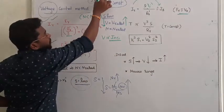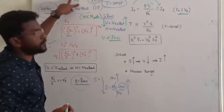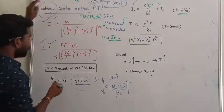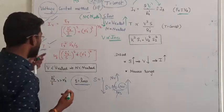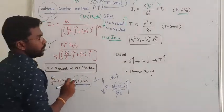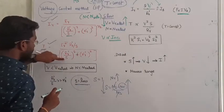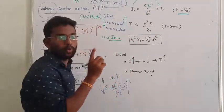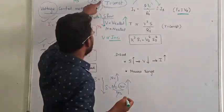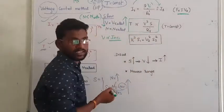We are working under slip control, where synchronous speed is constant. Under slip control, synchronous speed ωs is constant. Using the torque equation and cancelling terms — since E is approximately equal to supply voltage V and ωs is constant — the torque developed is directly proportional to V²·S / R'. This is a very, very important equation from an exam point of view.